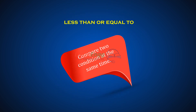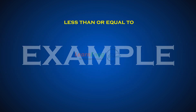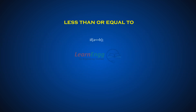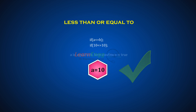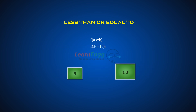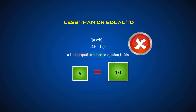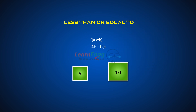Now compare two conditions at the same time using the less than or equal to operator. For example, if A is less than or equal to B, where A is 10 and B is 10: first compare A less than B — this condition is false — then check the equal condition; both values are equal, so the result is true. If A is 5, the equal condition is not satisfied, but the less than condition is true.